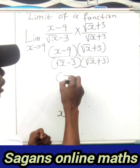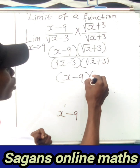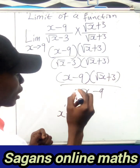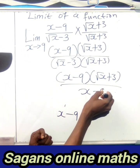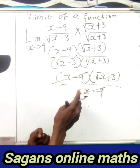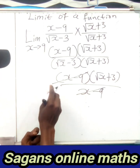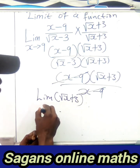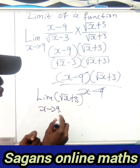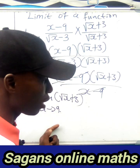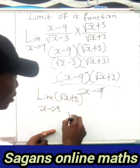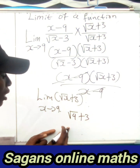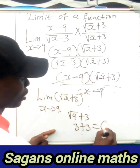So we now have (x minus 9)(√x plus 3) all over (x minus 9). The (x minus 9) factors cancel, and we're left with the limit of (√x plus 3) as x tends to 9. We can now substitute directly: √9 plus 3 equals 3 plus 3, which equals 6.